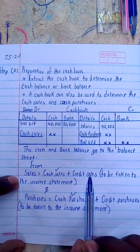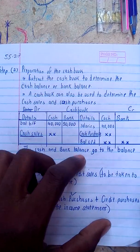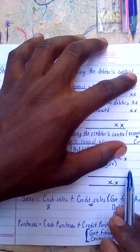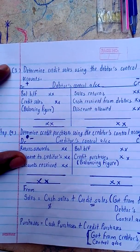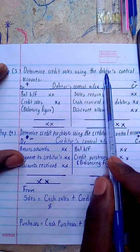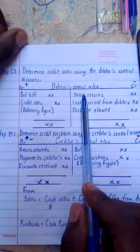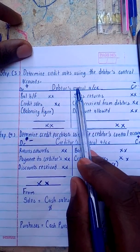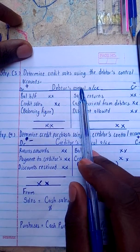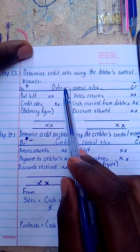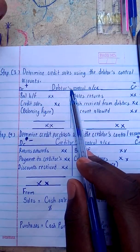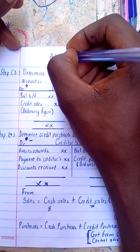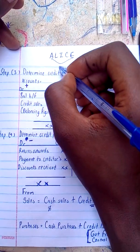Now determining the credit sales and credit purchases using the debtors and creditors control accounts will lead us to step three. For step three, it's going to be: determine credit sales using the debtors control account. With the debtors control account, what you need to know is that somebody here is being demanded. What is going to increase that debt or decrease it? Debtors are assets. From Alice's side — debit and credit.